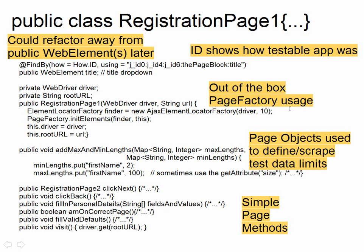What I do is build methods in the page object that have workflow elements, so I can set a whole bunch of them at once. Instead of entering the title, name, and date of birth individually from the test, I'll use the fill-in personal details method on the page and abstract that workflow away. I was using the page objects in the setup for the test so that the page object would go to a page, scrape all the limits and data off that page, and feed that information back to the test data generator.